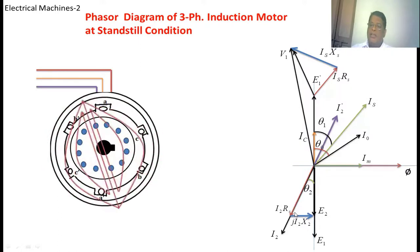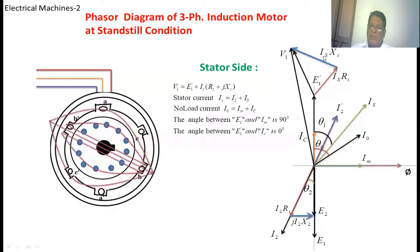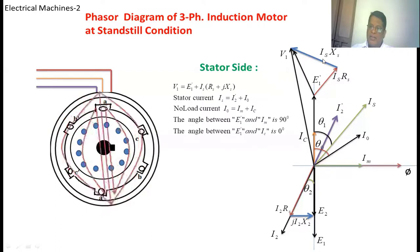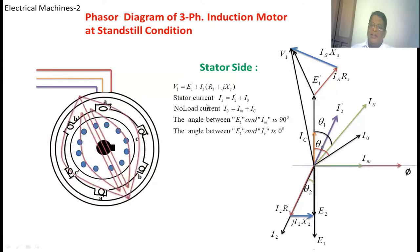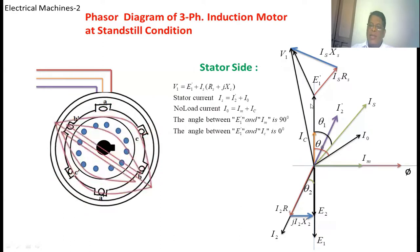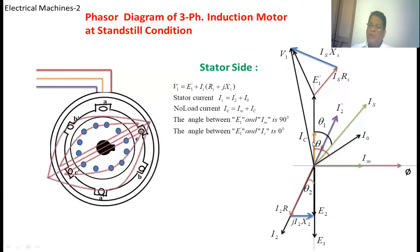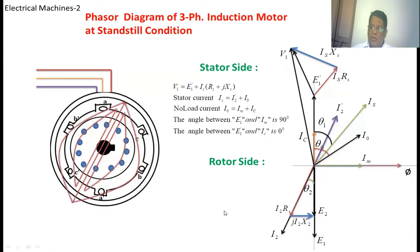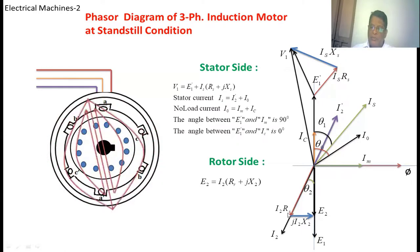This is the phasor diagram of a three-phase induction motor at standstill condition. From the stator side: V1 = E1-dash + IS·(RS + j·XS). The stator current IS = I2-dash + I0, and the no-load current I0 = IM + IC, where IM is the magnetizing current and IC is the core loss current. The angle between E1-dash and IM is 90 degrees and the angle between E1-dash and IC is 0 degrees. From the rotor side: E2 = I2·(RR + j·X2).